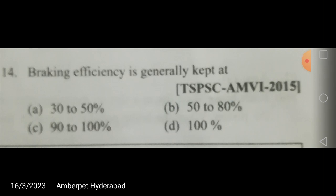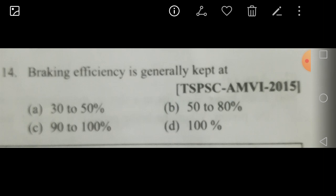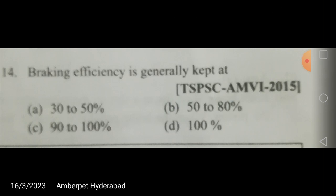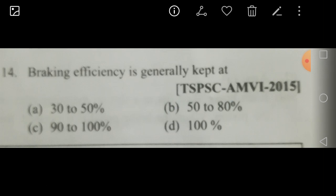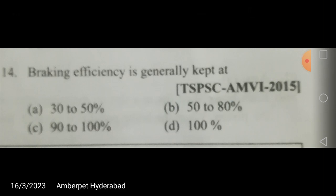So from F equals mu times R, substituting R equals W, we get F equals mu times W. If the coefficient of friction achieved is unity, the total retarding force at the wheels equals the vehicle weight itself, equal to the gravitational force on a falling body of the same mass. The vehicle then experiences deceleration equal to g, and the brakes are said to be 100% efficient. This is the theoretical limit for braking efficiency.